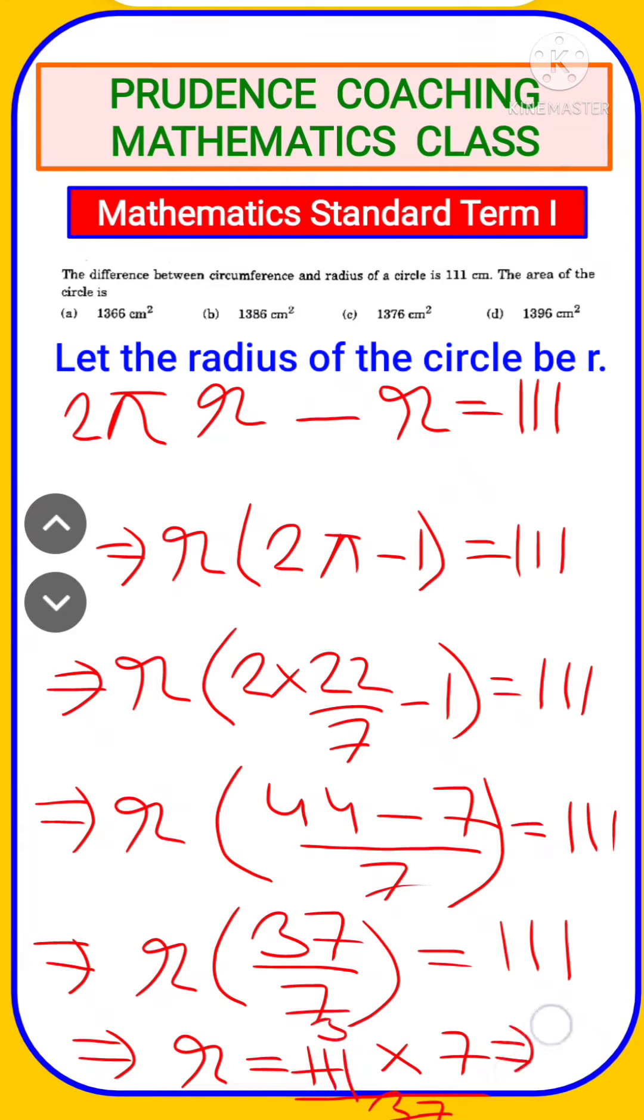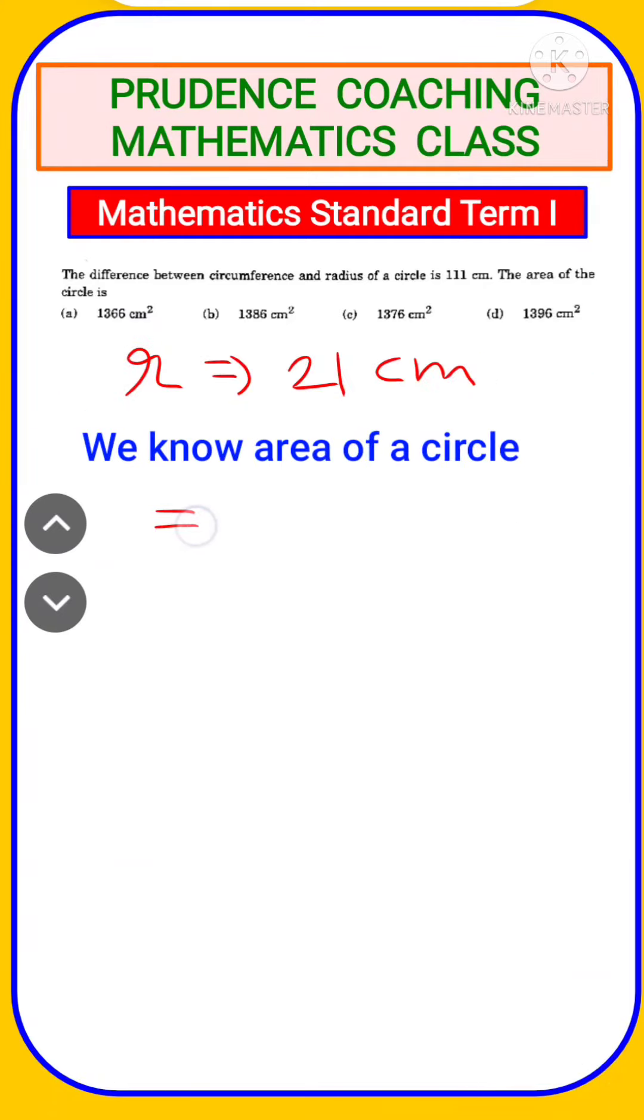Area of a circle equals to πr². So let us put the value of r here. So π is 22 by 7 into r, that is 21 cm into 21 cm.